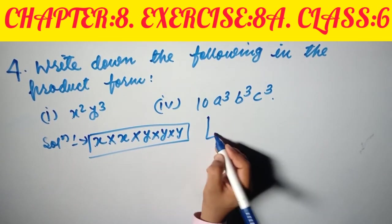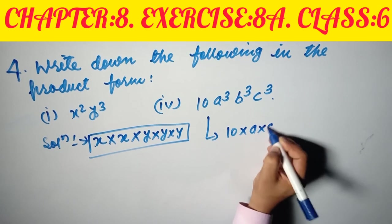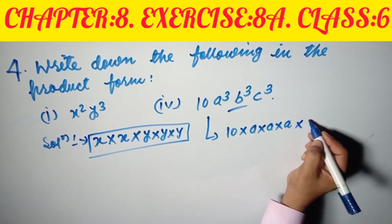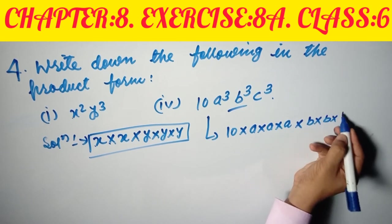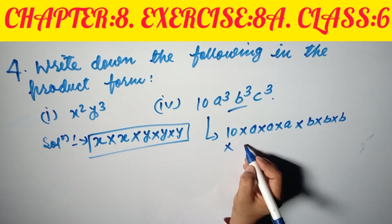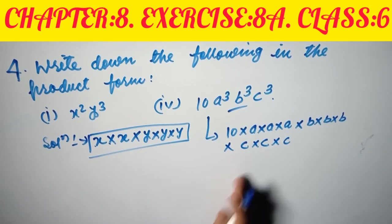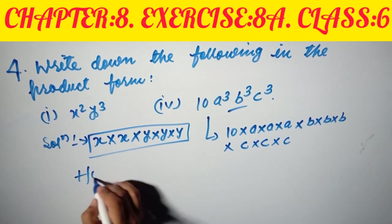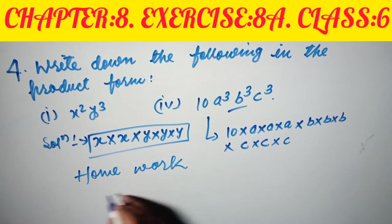Another example: 10a³b³c³ in product form is 10 as it is, multiplied by a three times (a times a times a), multiplied by b three times (b times b times b), multiplied by c three times (c times c times c). That is your answer.